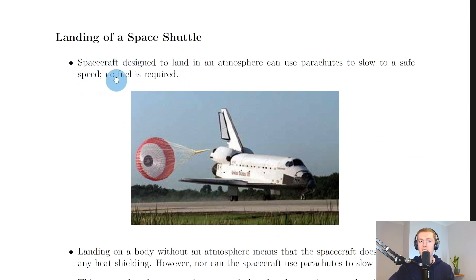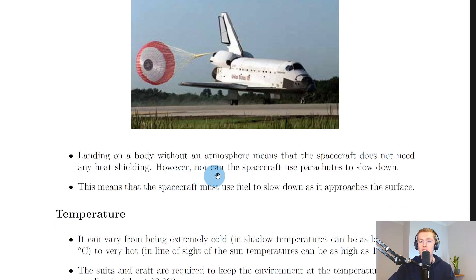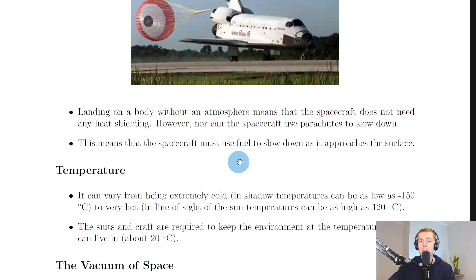Spacecraft designed to land in an atmosphere can use parachutes to slow to a safe speed—no fuel is required. There's an example of the parachute attached to a space shuttle to slow it down. Landing on a body without an atmosphere means that the spacecraft does not need any heat shielding. However, nor can the spacecraft use parachutes to slow down. This means that the spacecraft must use fuel to slow down as it approaches the surface.